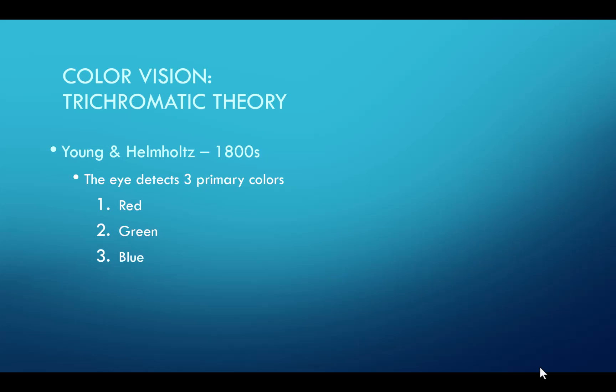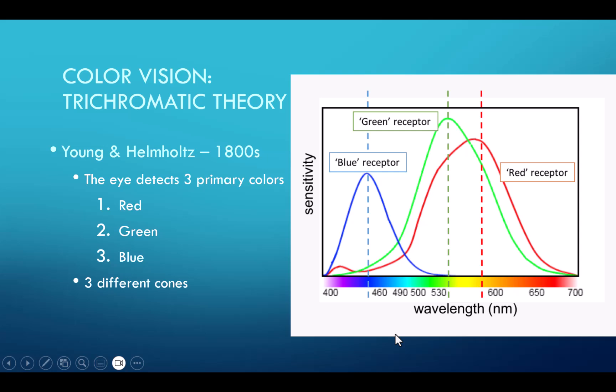So Young proposed in 1802 that we had these three different types of cones. And 50 years later, Helmholtz demonstrated that all of the colors that we see can be a result of different combinations of these three colors.